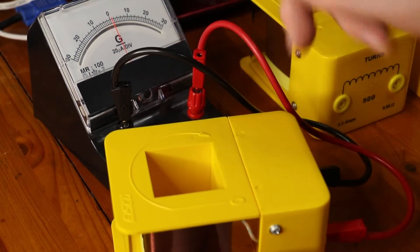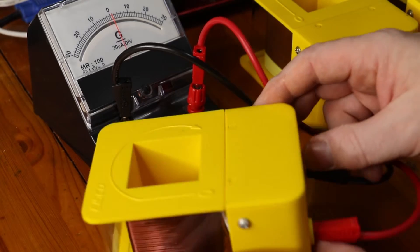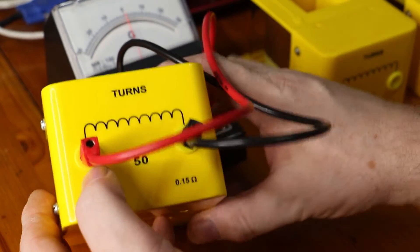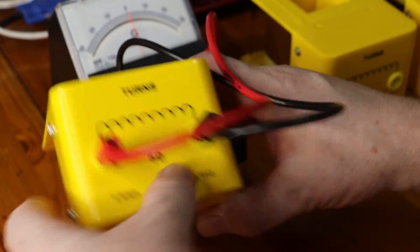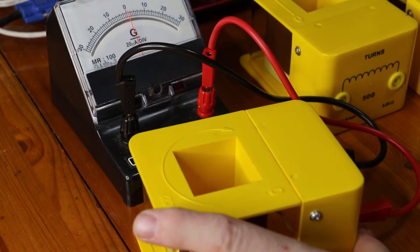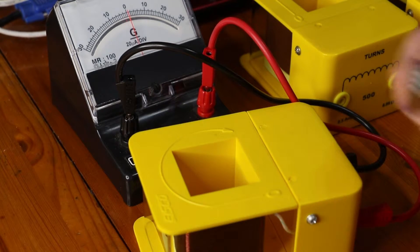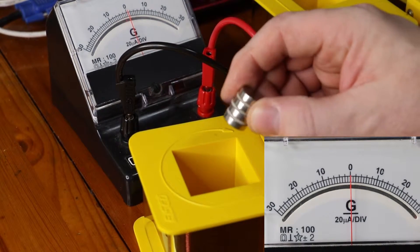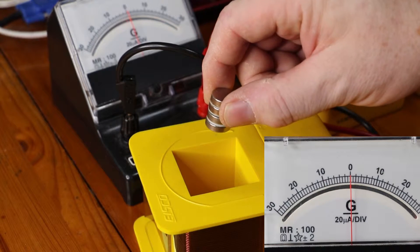I have here a galvanometer connected to a 50-turn coil. What I'm going to do is take a strong magnet and put it slowly into the coil.